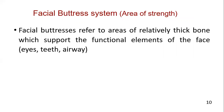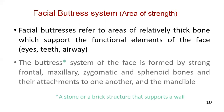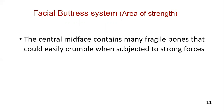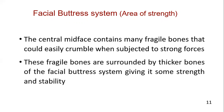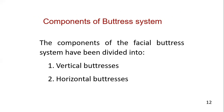The facial buttress system refers to the areas of relatively thick bone that support the functional elements of the face — for example, the eyes, teeth, or airway. The facial buttress system is formed by strong bones that give support to weaker bones. As pointed out, the bones of the mid-face are very weak and fragile, so they are supported by the thicker bone of the facial buttress system to give them strength and stability.